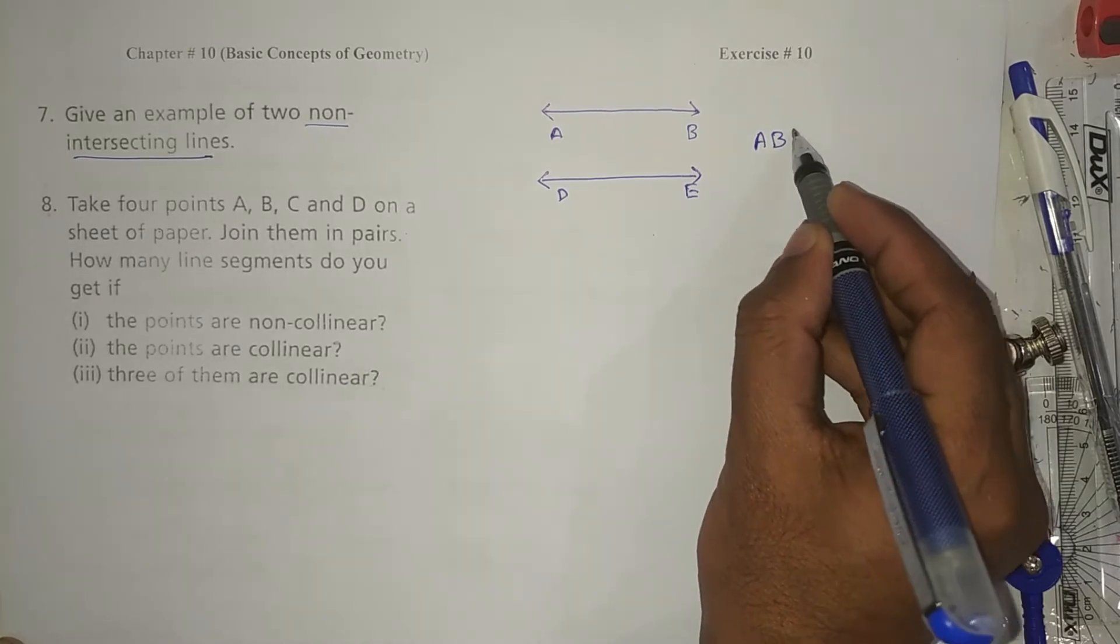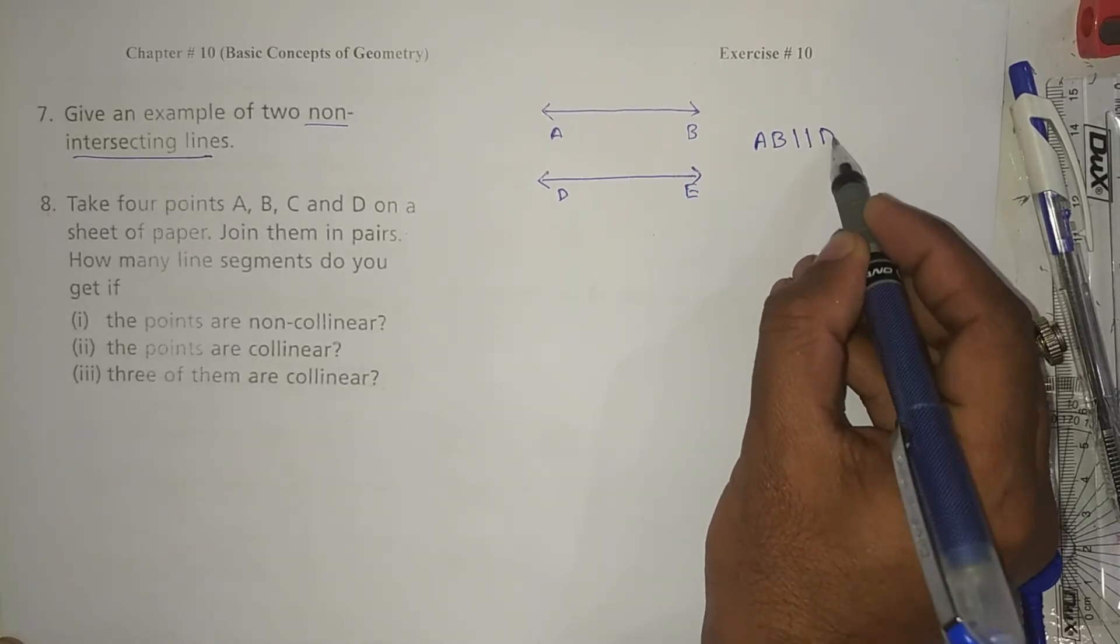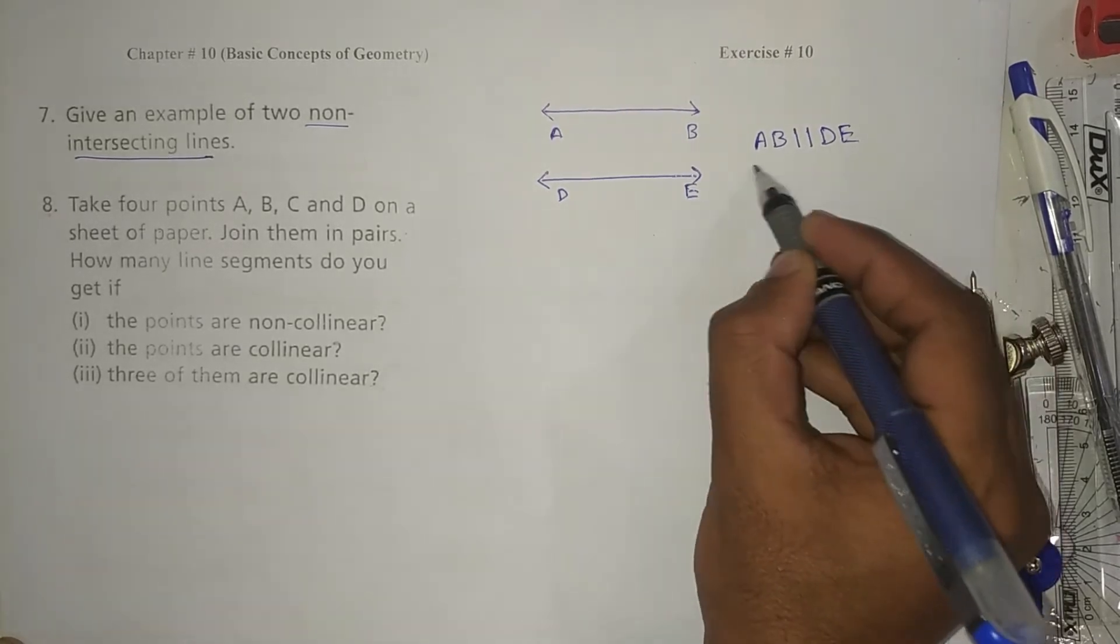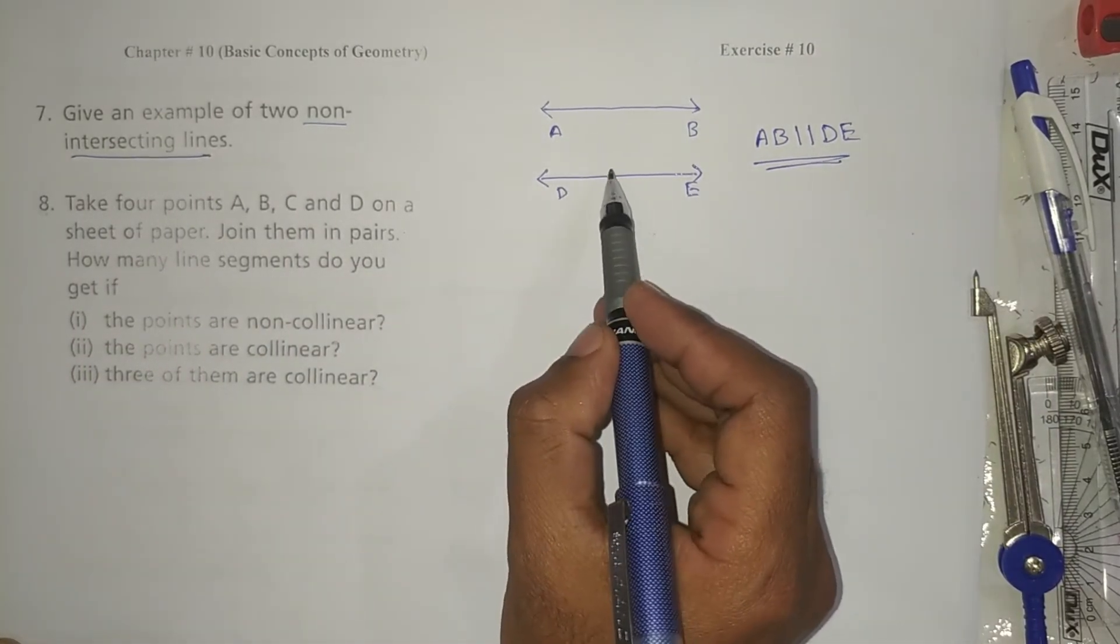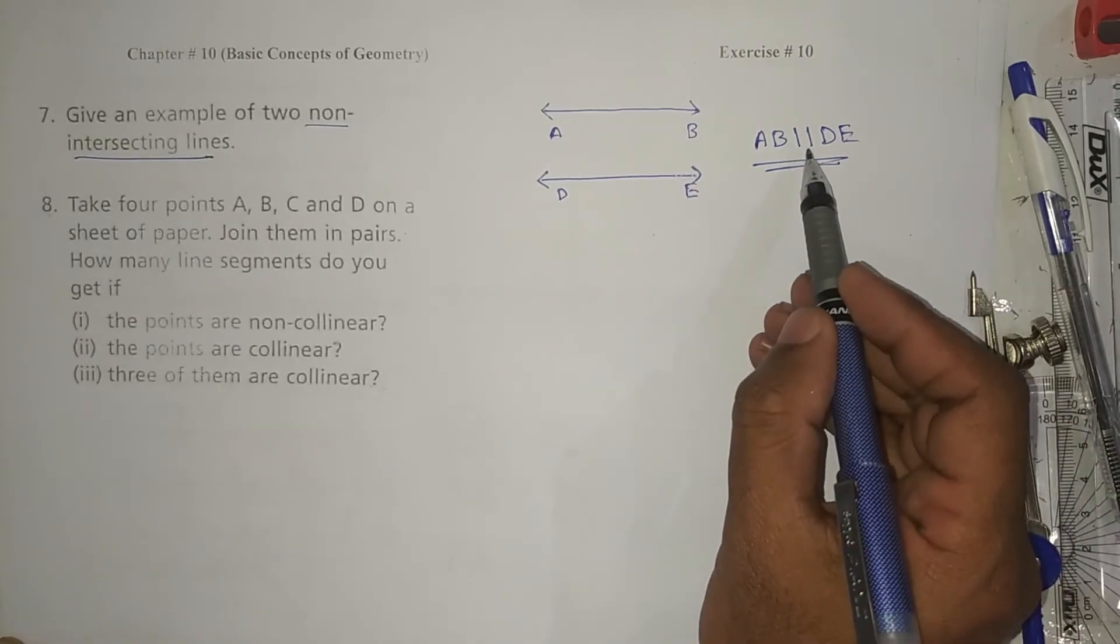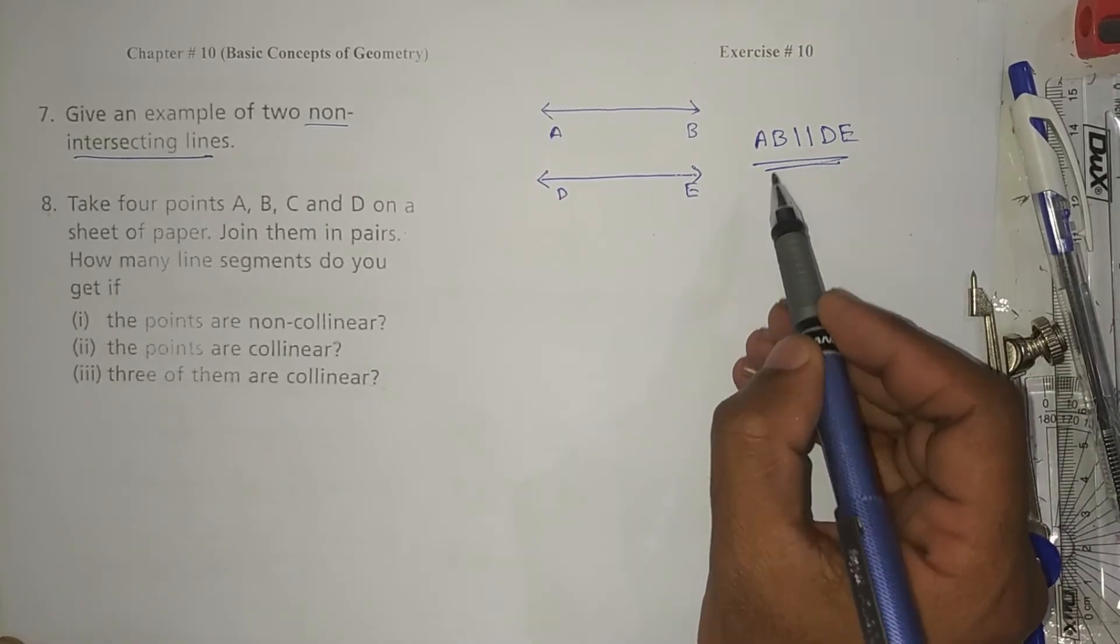We can write like this: AB parallel to DE. Okay, so non-intersecting lines are these two lines, and their name is parallel lines.